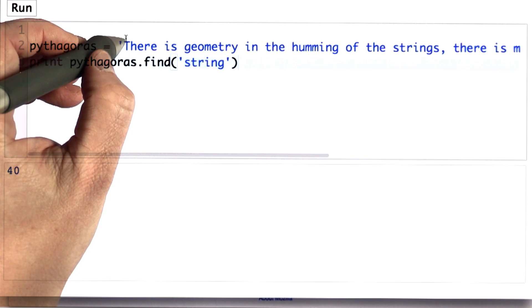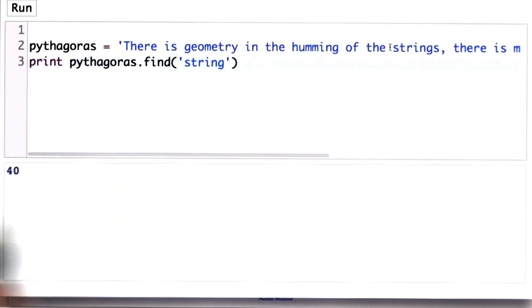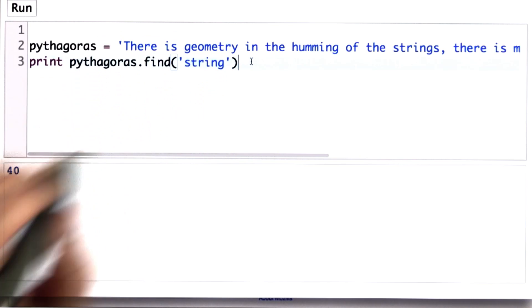If we counted, this is position zero, we would see string starting at position 40. Since I don't want to count that far, we can use our indexing to see if that's right. So let's print Pythagoras starting from index 40.